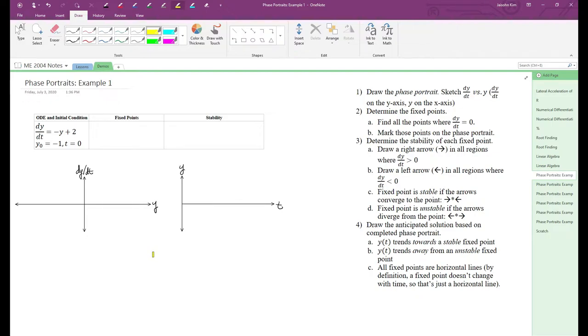In step 1, we plot dy/dt versus y. This is just going to look like a straight line that intersects the horizontal axis at 2.